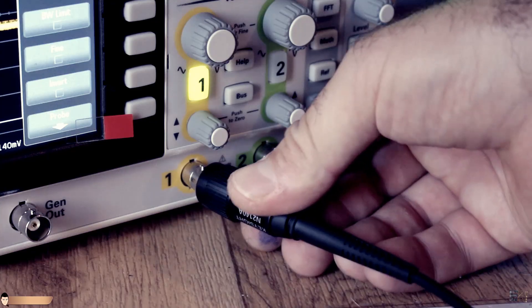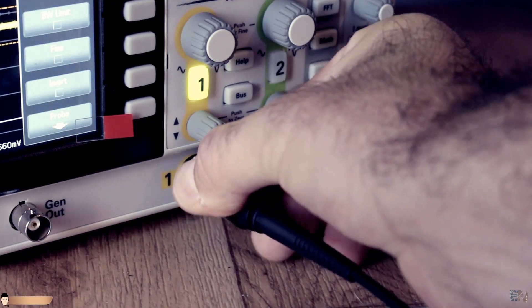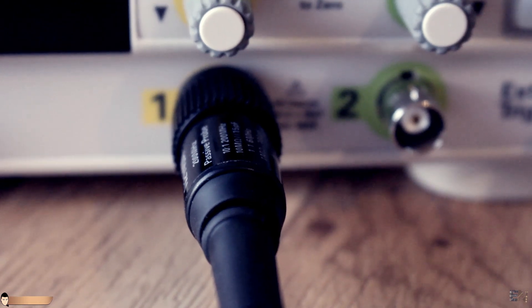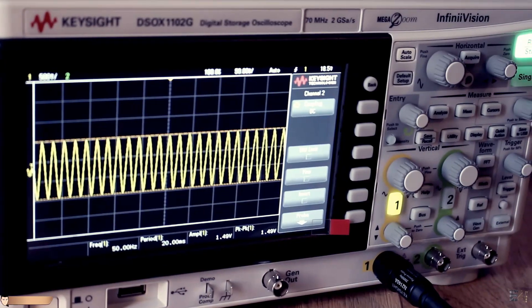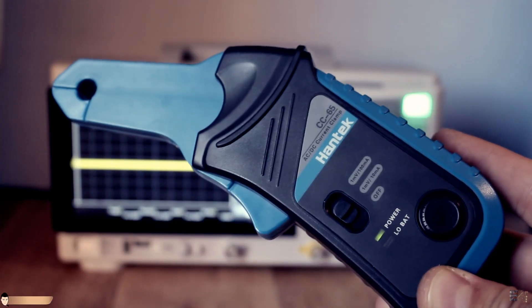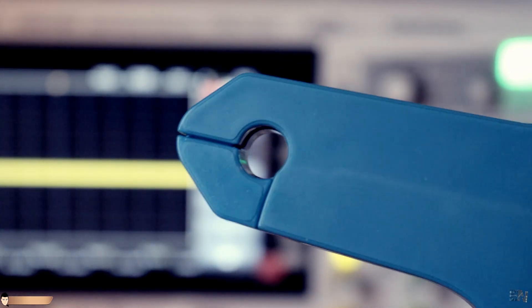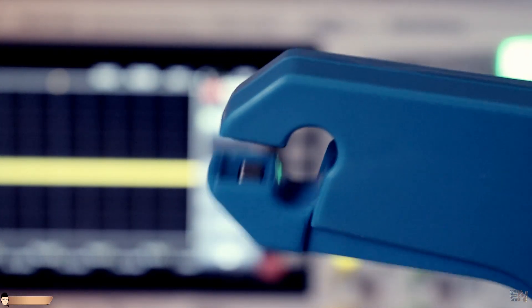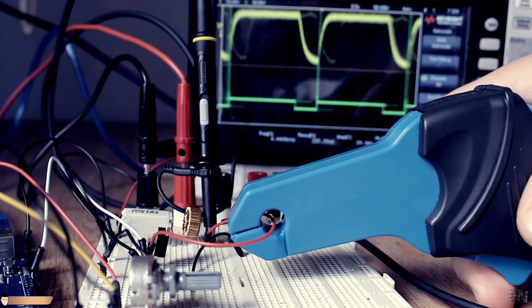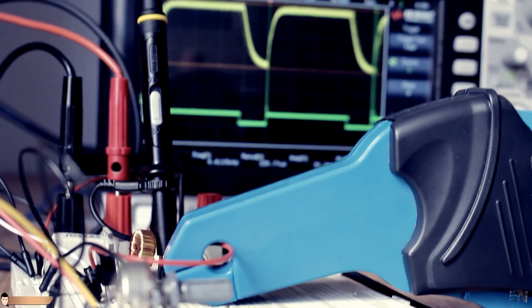The probe takes care of the very critical coupling between the measured object and the oscilloscope. In this video we will talk about current probes, and to be more specific about non-invasive current probes, which means that we don't have to directly connect it to the open circuit in order to take a measurement.